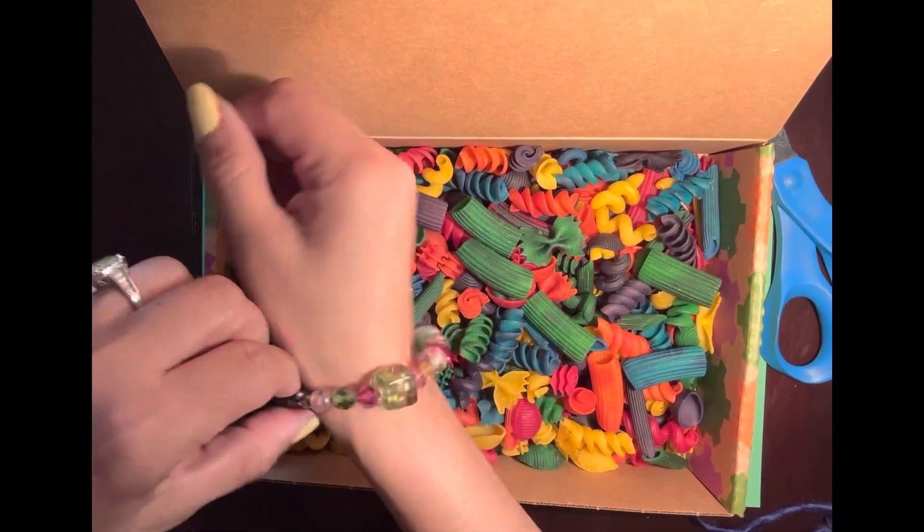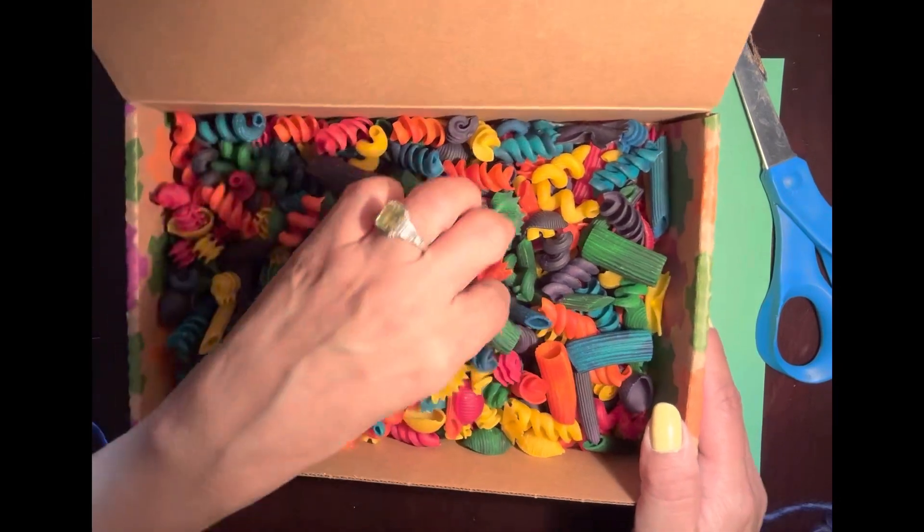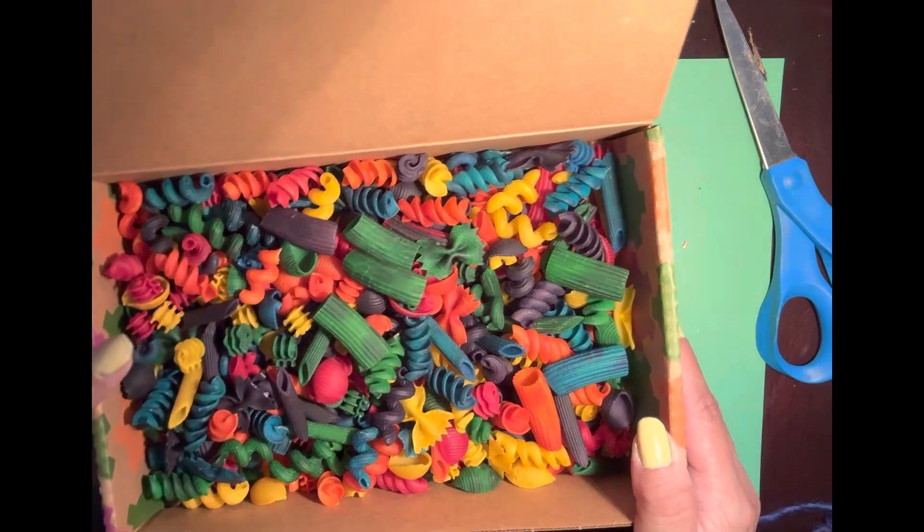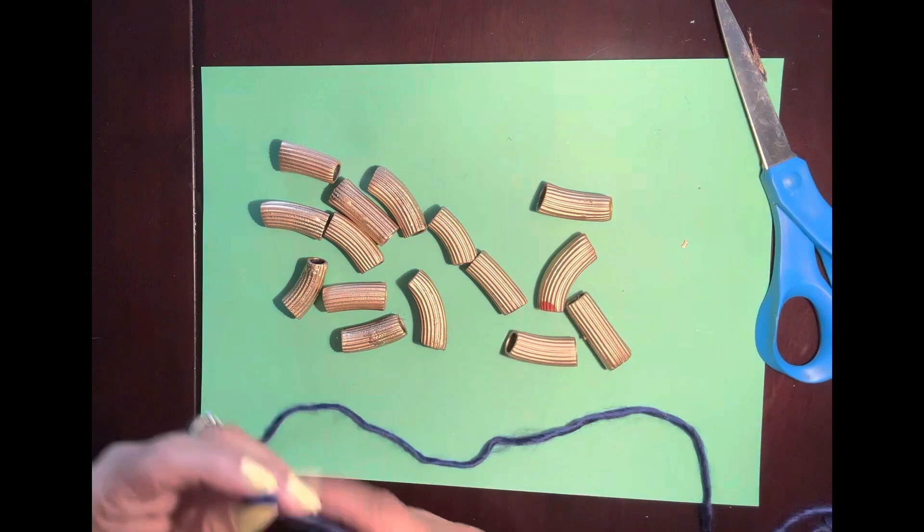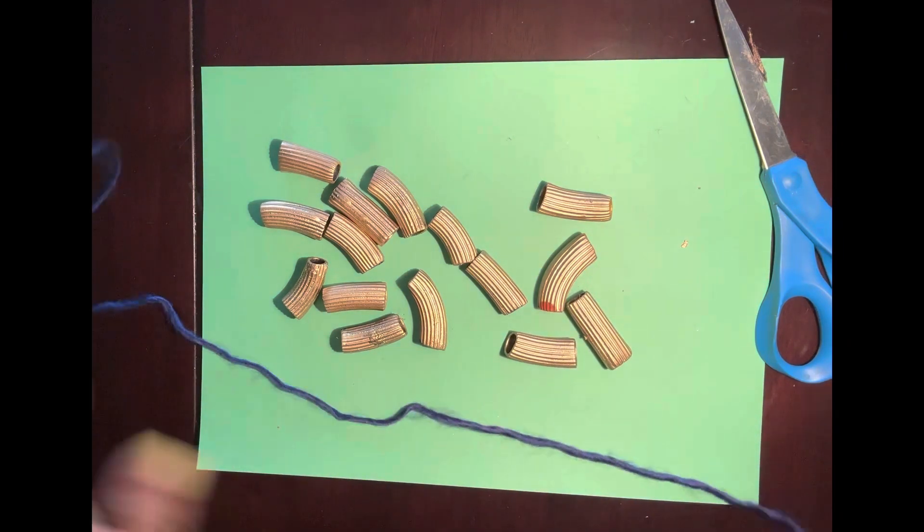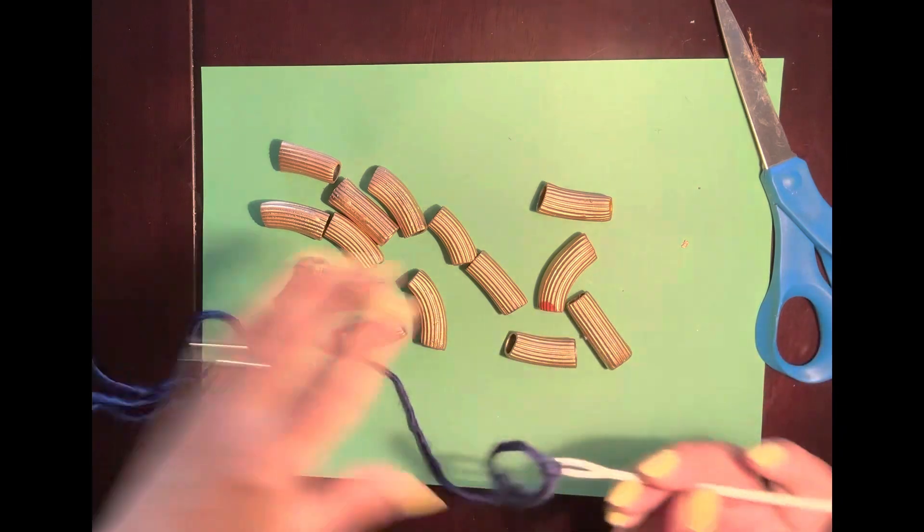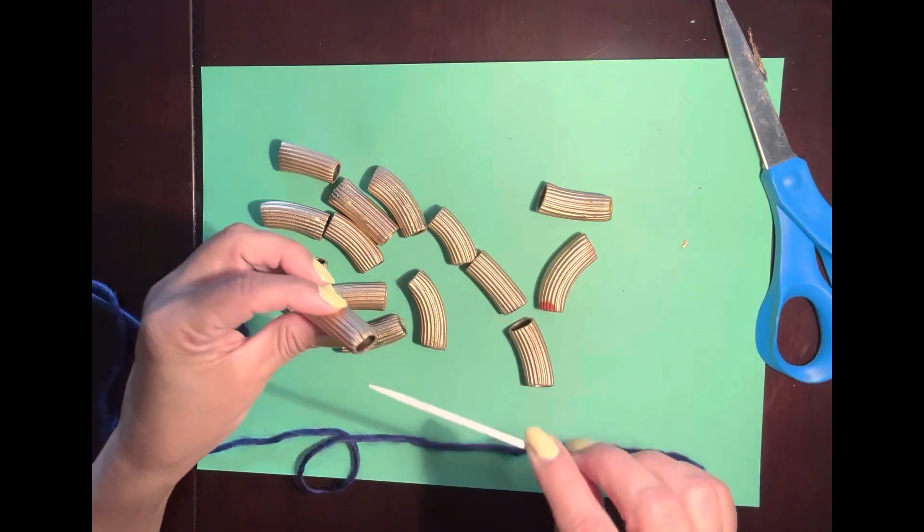Now you can do a colorful one like this, these are the best ones to do it with. Or you can do like I did - I spray painted mine first because I wanted them to be gold, and then I put a long, like two feet I think, of length of yarn. I did purple because I love purple and I'm just stringing them on.